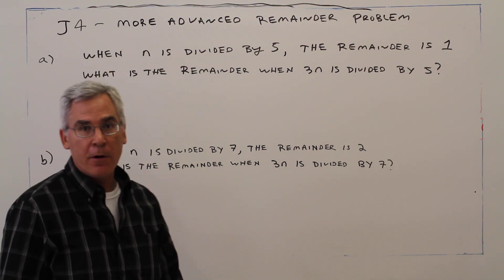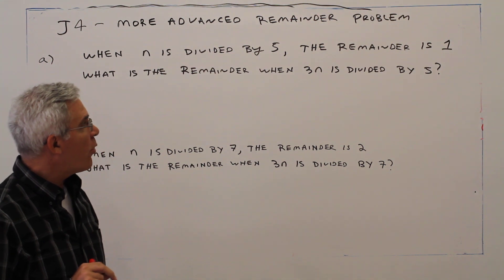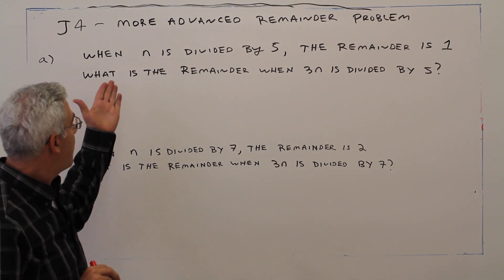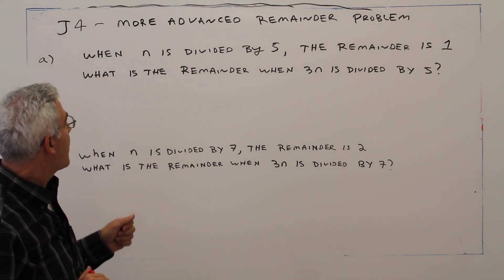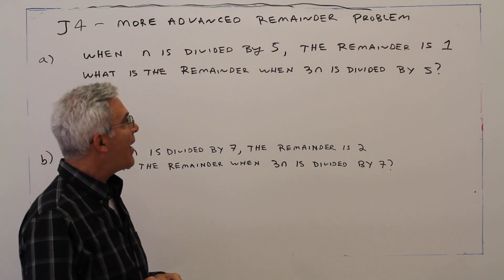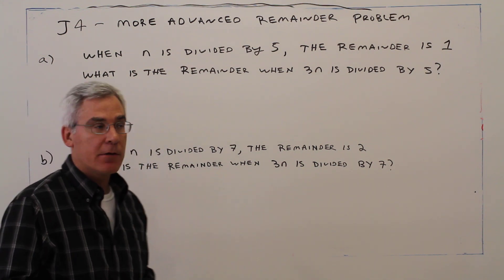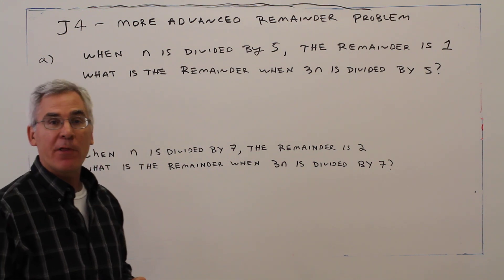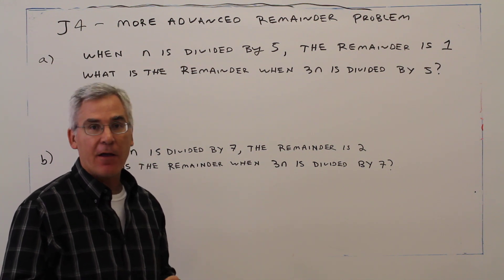Welcome to video J4. There's two problems, more advanced remainder problems, part A and part B. Part A: When n is divided by 5, the remainder is 1. What is the remainder when 3n is divided by 5?